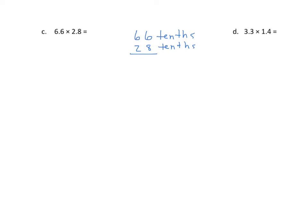We have 8 times 6 is 48. Regroup the 4. And 8 times 6 is 48 once again. 48 plus 4 is 52. Now we'll insert our 0 because we're multiplying from the tens place. And 2 times 6 is 12. Regroup the 1. And 2 times 6 is 12 again, plus 1 is 13. We're going to find the sum of the partial products. And since we have tenths and tenths, the answer is in hundredths.